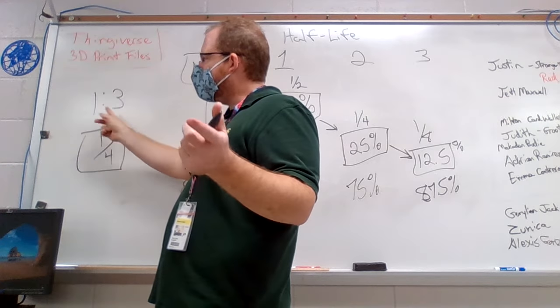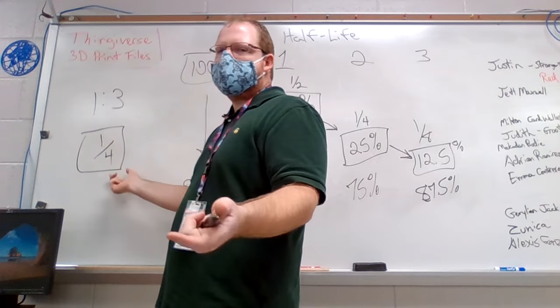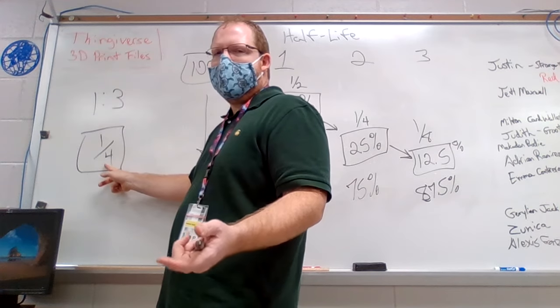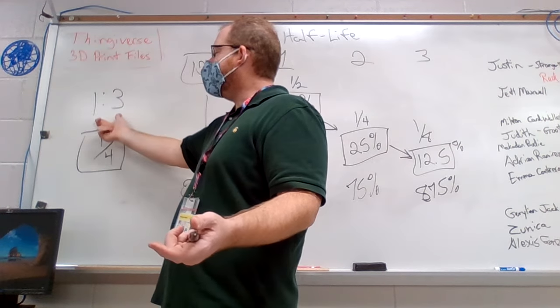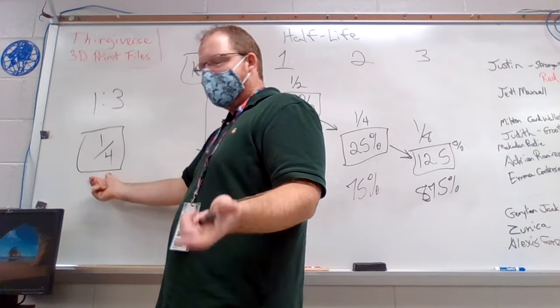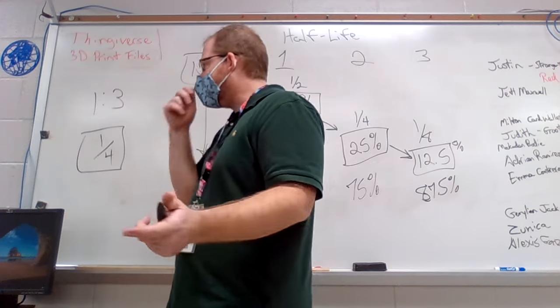So remember that a ratio doesn't have a total. It's one part uranium, three parts lead, where a fraction does have a total. It's one out of four total that you have on this fraction. So one third or one to three ratio should be equal to one to four or one quarter of a fraction.